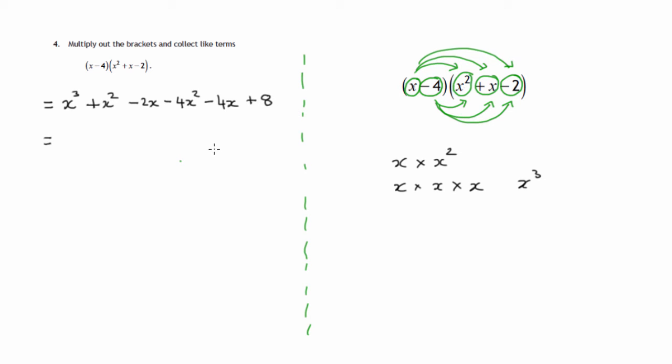Now let's look for like terms. The only term in x cubed is this one here where we've got one of them, so 1x cubed. There are two terms in x squared. There's plus 1 minus 4. 1 minus 4 is minus 3 of them, so one of them minus 4 of them is minus 3 of them. That's your x squared terms.